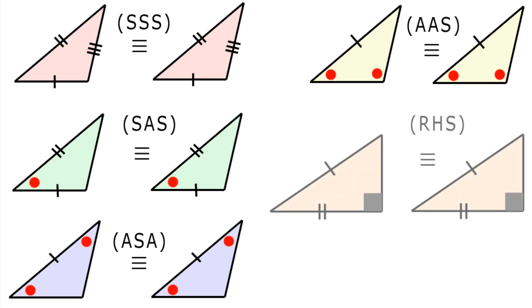Condition 5: RHS or ASS. Two sides, one the hypotenuse, in a right-angled triangle are the same. In a right-angled triangle, the hypotenuse and one other side are equal to the hypotenuse and a corresponding side in the second triangle.